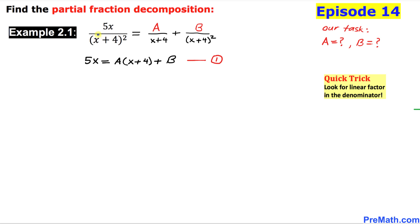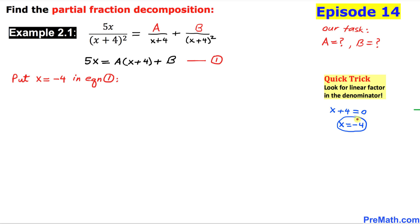In the next step we use a quick trick: look for the linear factor in the denominator. We have just one linear factor, which is x plus four. We set it equal to zero, so x plus four equals zero, which means x equals negative four.